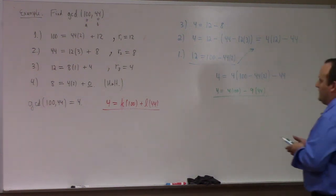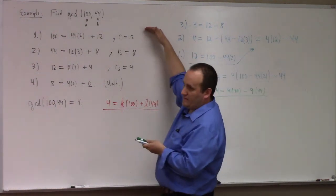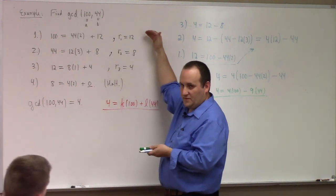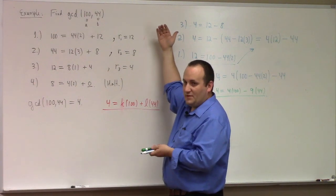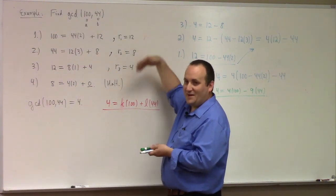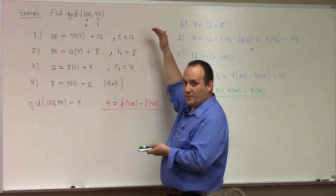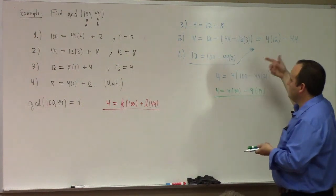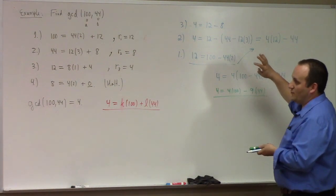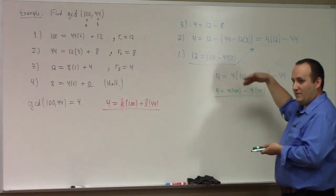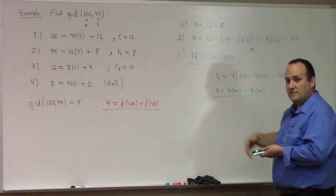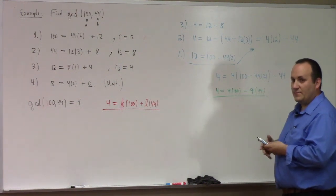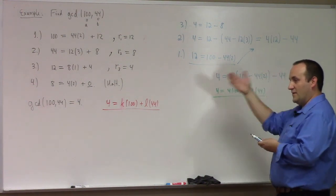Most people can understand the Euclidean algorithm without too much trouble — it's straightforward once you do it. If you just see somebody do it you don't really understand it; you have to do it for yourself. The only way to internalize this algorithm is to actually do it for a couple of numbers — by about the third one you should be bored.